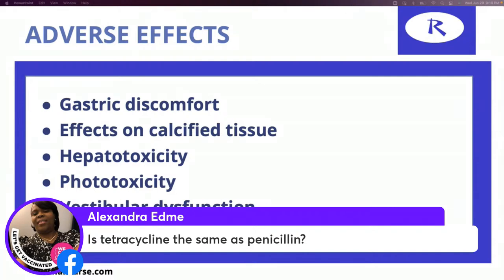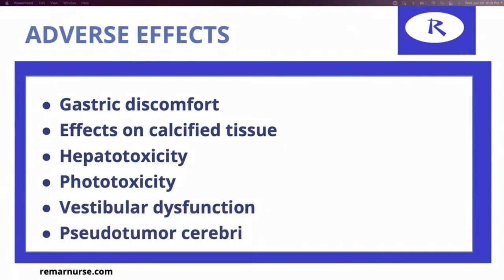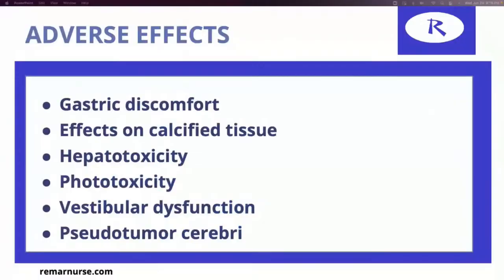Is tetracycline the same as penicillin? They both are definitely antibiotics, but you will learn very different things about penicillin and tetracyclines. For your NCLEX exam, make sure you know all the things we're talking about for tetracyclines, but also take time to get into your drug reference about penicillins. I talk about the difference between tetracyclines, penicillins, and aminoglycosides in my full NCLEX review — you definitely have to know that.